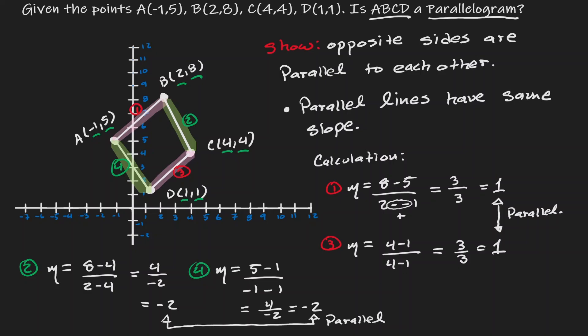What we have shown is that opposite lines are parallel to each other. Side one was parallel to side three. They have the same slope. Side four was parallel to side two, because they have the same slope.